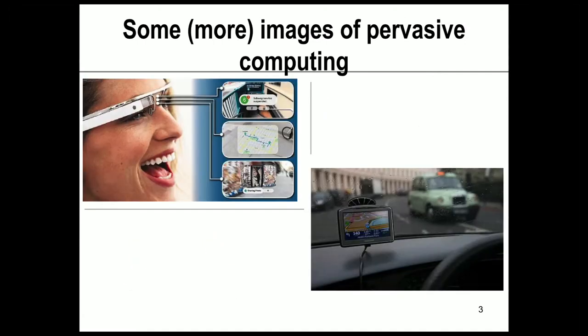Another more recent version of the glasses concept is shown at the top left. This is a prototype for Google Glasses. Here is our user entering a subway, and the glasses show that subway line six is suspended as we enter. Data in the subway is fed to the glasses and given to us. We might be able to program the system for particular lines we're interested in — how late it is, how long we've got to wait. The second image is Google Maps on a pair of glasses, so you're looking at your environment and can see where you should be going, not by having to look at a device, but just by looking ahead at the information projected into your eye from the glasses.